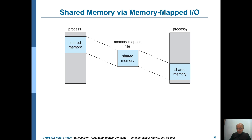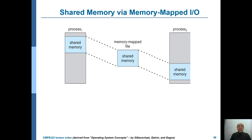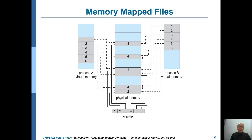This is for memory-mapped files — two processes sharing a file. If you want to share memory, it is similar, but this time you don't have the disk because you're not dealing with a file. So it could be used for both shared memory and for shared files.